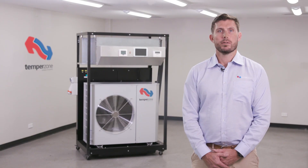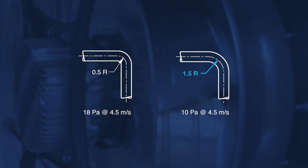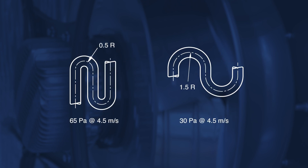Minimum airspeed across the indoor coil should not exceed 1.3 meters per second. Use radii of at least 1.5 times the duct diameter for bends. Tight radii bends can double the pressure loss. 180 degree U-bends surprisingly do not generate double the pressure loss of a 90 degree bend, but something much less than double.